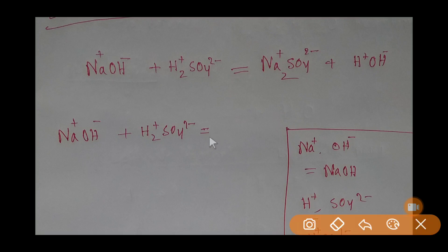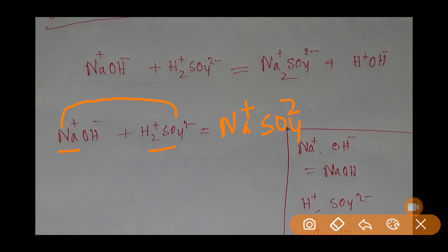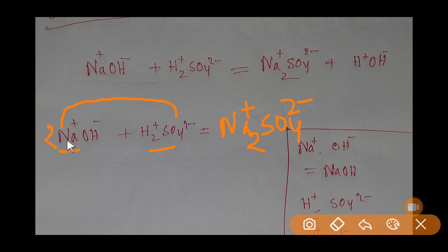Sodium hydroxide is the base and sulfuric acid is the acid. The positive part of the base goes to the negative part of the acid, giving us sodium sulfate. To write the correct formula we need one more positive charge, so we add a coefficient of two — meaning we take two sodium atoms, and the number of hydroxide ions also becomes two.